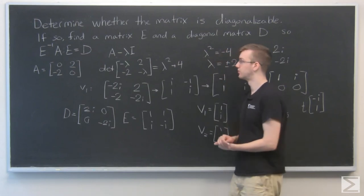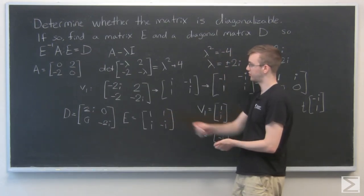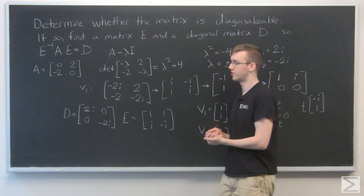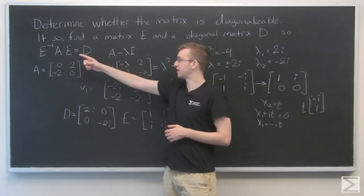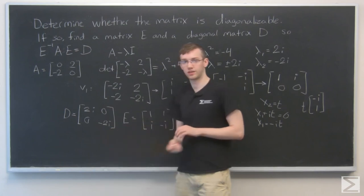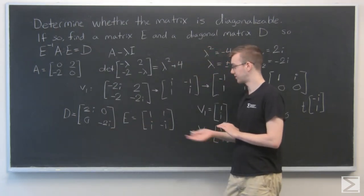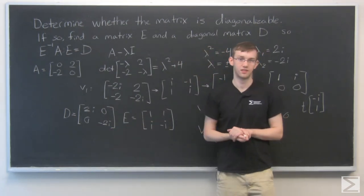So that's all you need to do. We have found our e and our d. If you want at home you can check this yourself. Just put in e inverse ae and you'll get this matrix right here. So that's all you need to show. That's your answer.